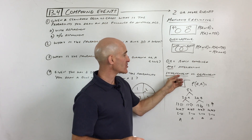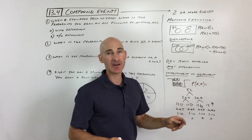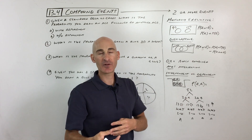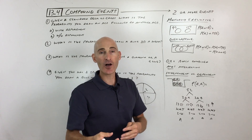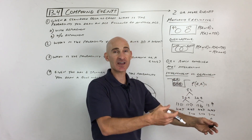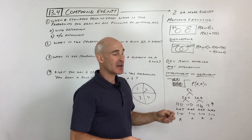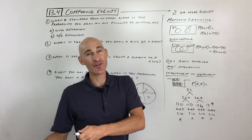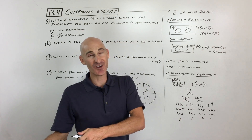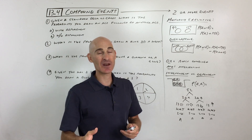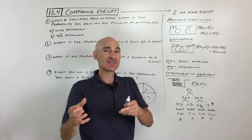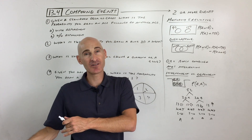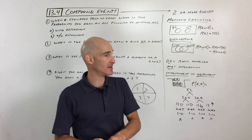Another thing we want to understand is independent versus dependent. Say you run some type of experiment or trial, and then you do a second event or trial. Independent means the second thing that occurs is not affected by the first thing that occurred. Dependent means the probabilities are going to change based on what happened the first time.